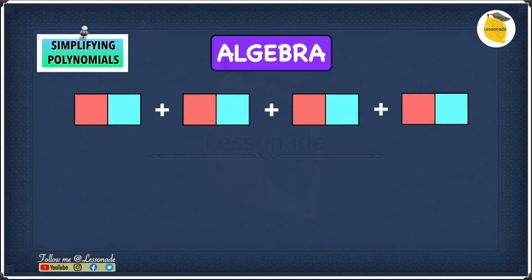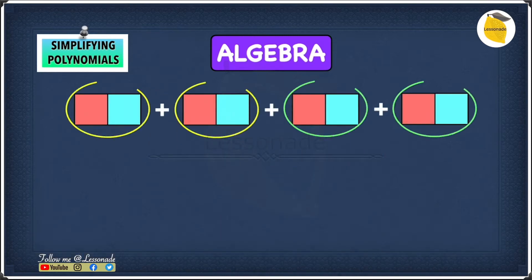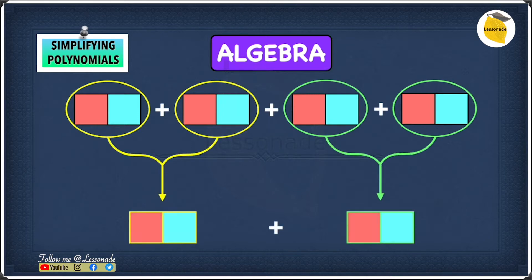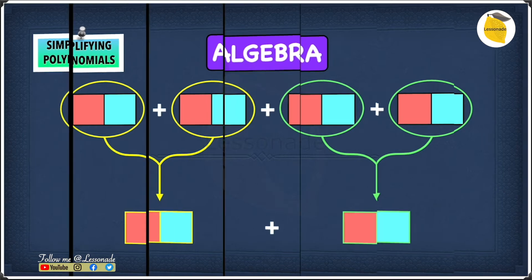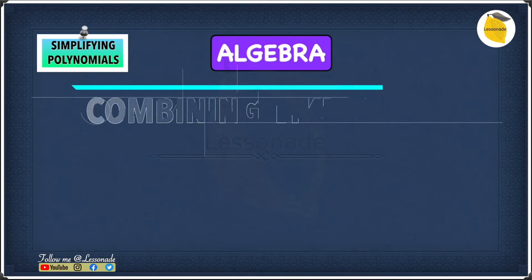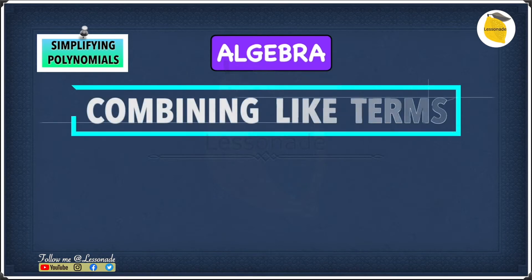Simplifying polynomials is basically when similar terms can be combined to make the polynomial simpler. How do we simplify polynomials? To simplify polynomials, all you need to do is combine like terms.